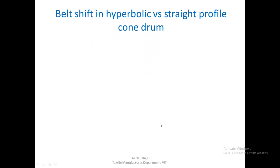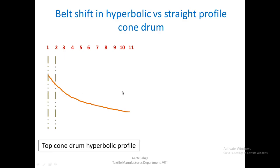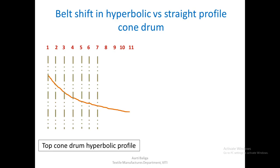Let us assume this is the profile of the top cone drum — a slightly exaggerated but useful view. This is the hyperbolic shape of the conventional cone drum. Let us say there are 11 shifts expected in the cone drum belt as the bobbin is built up, and 11 layers to be built. The belt will shift from left to right in equal distances until it completes all 11 layers.